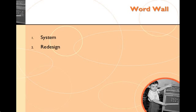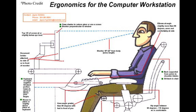Some common examples of systems would be a cell phone, a computer, a car, or your human body. Redesign means to make a new design, which can be considered a plan or a drawing to show how something should look or work. For example, an ergonomics diagram for a computer workstation showing components like seat placement, monitor, and keyboard positioning would be an example of a design or a redesign.